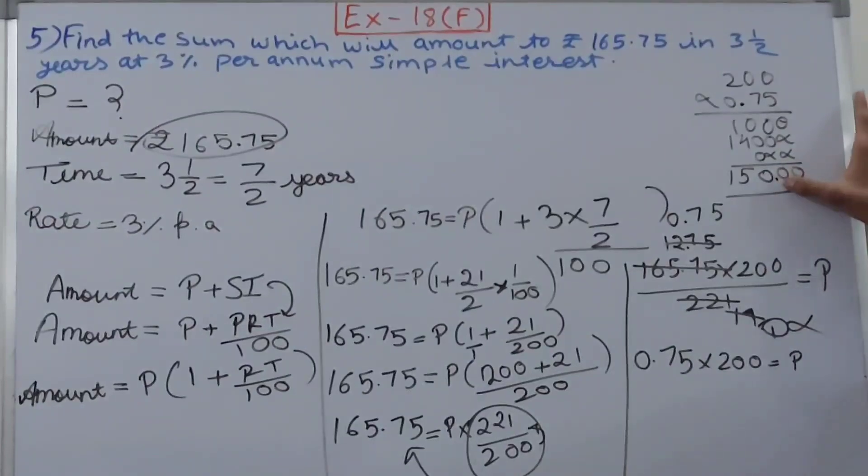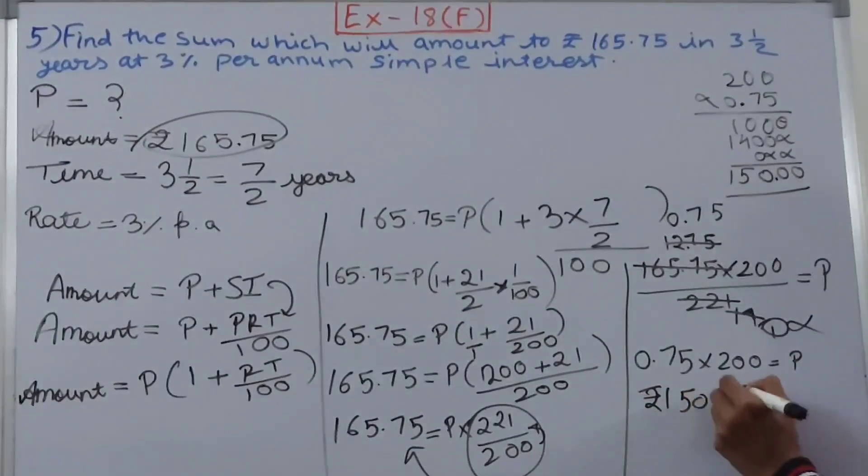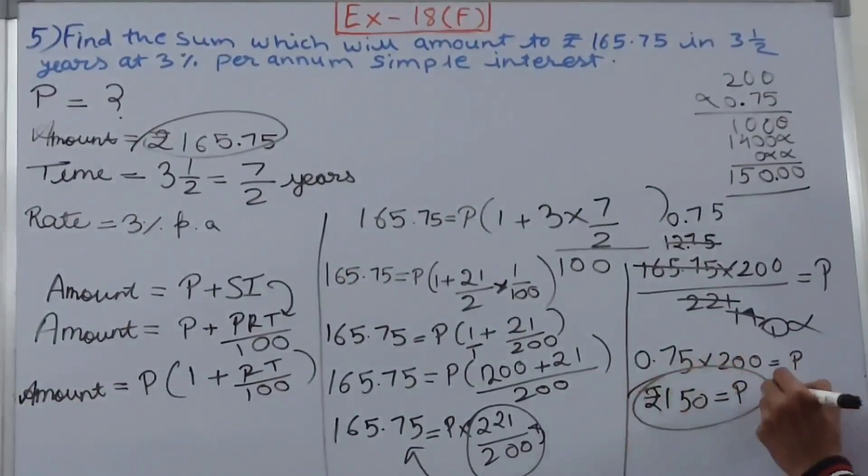So we get 150 - ignore the other two zeros. So rupees 150 equals the principle. This becomes our final answer.